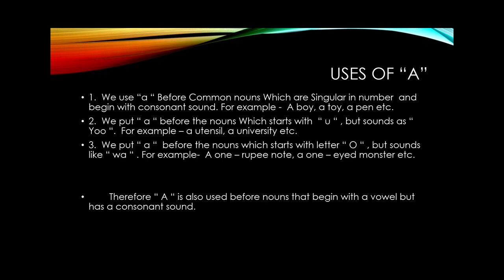Now, number three: we put 'a' before nouns which start with the letter 'o' but sound like 'wa'. Say for example, a one-rupee note, a one-eyed monster, etc. If I take the word 'orange', the pronunciation of the first letter 'o' is as 'o'. But in the examples in point three — one rupee, one eyed — the pronunciation of 'o' is not like 'o', but it is pronounced as 'wa'. Their pronunciations are somehow exceptional from the general ones. That's why we have to put 'a' before these words, even though they are vowel sounds.